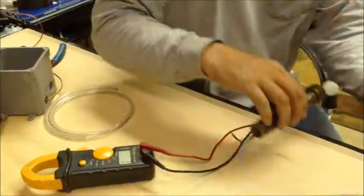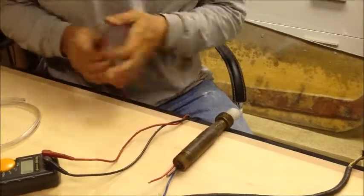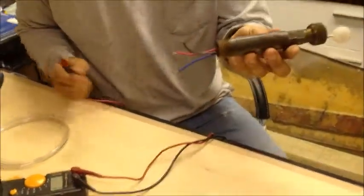The purpose of this video is to show you how to troubleshoot a level switch. There's many different kinds. This would be a Dwyer L6.